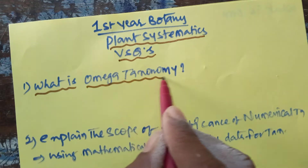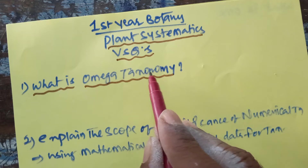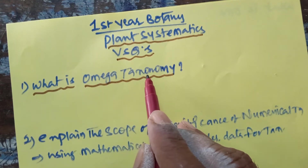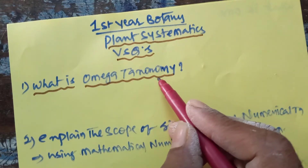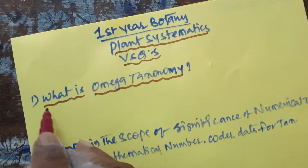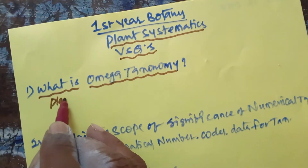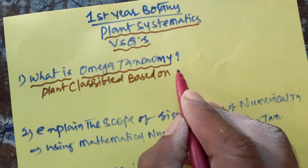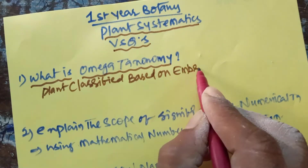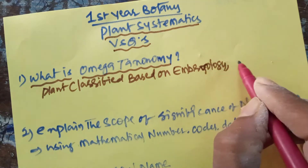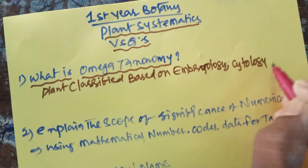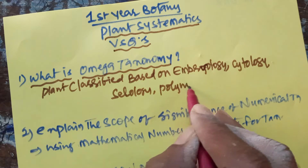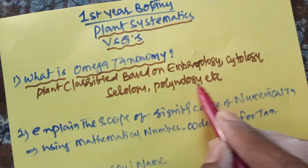The first question is: what is omega taxonomy? Taxonomy is of different types, and the important taxonomies are two: alpha taxonomy and omega taxonomy. Alpha taxonomy means plants classified based on morphological characters. Omega taxonomy means plants classified based on morphology, embryology, cytology, serology, palynology, etc.